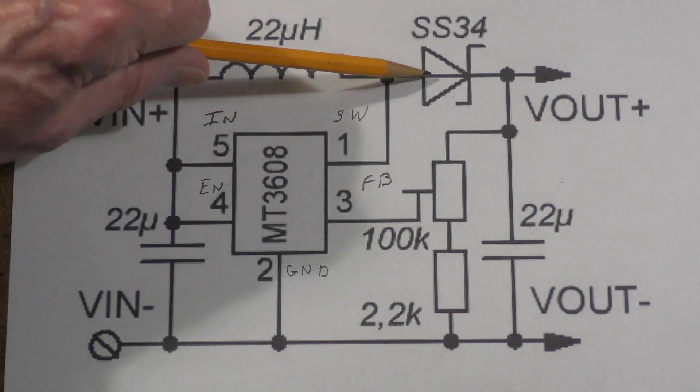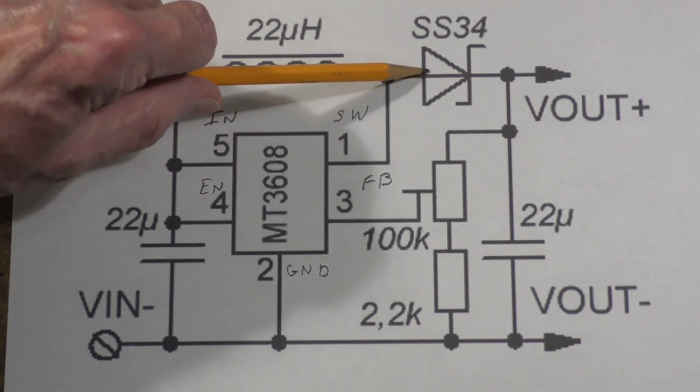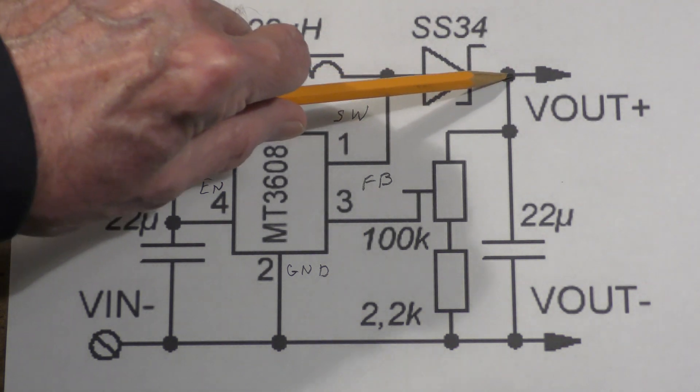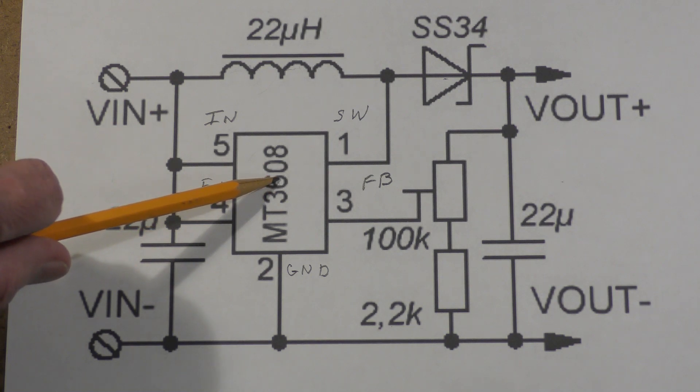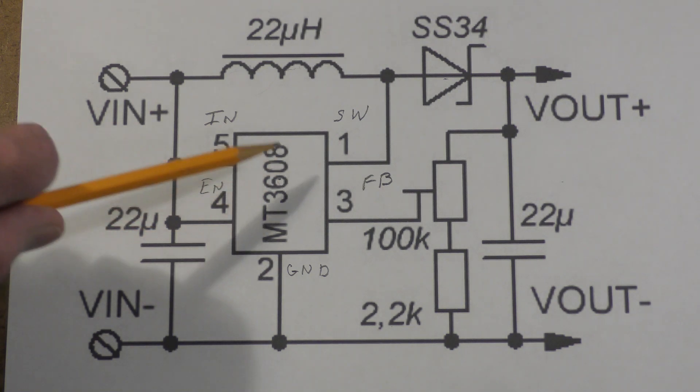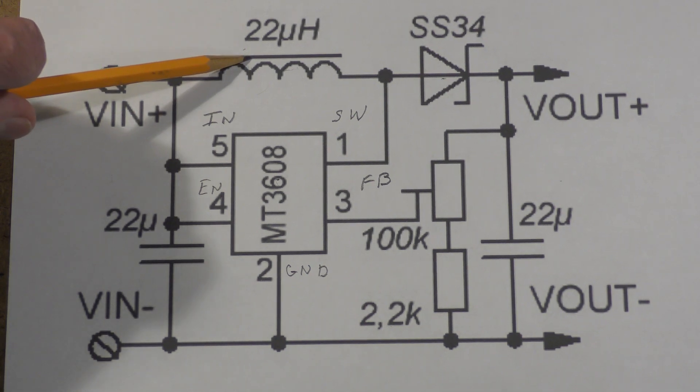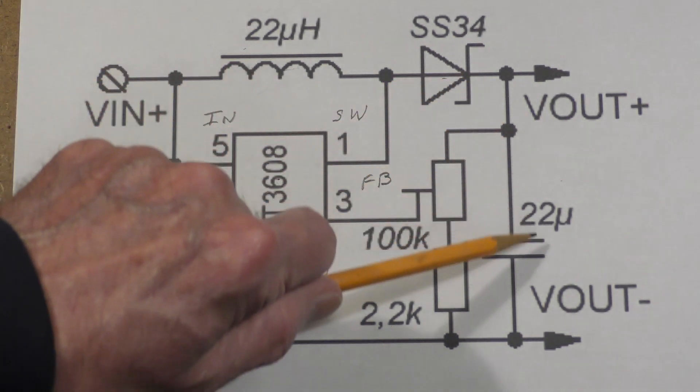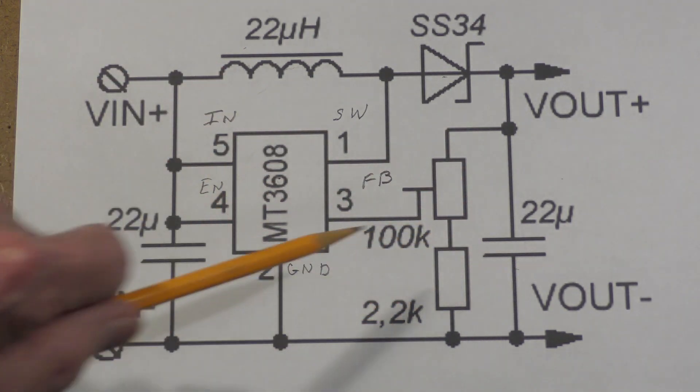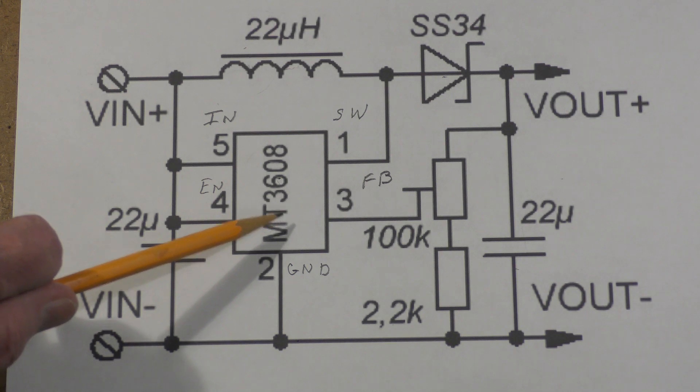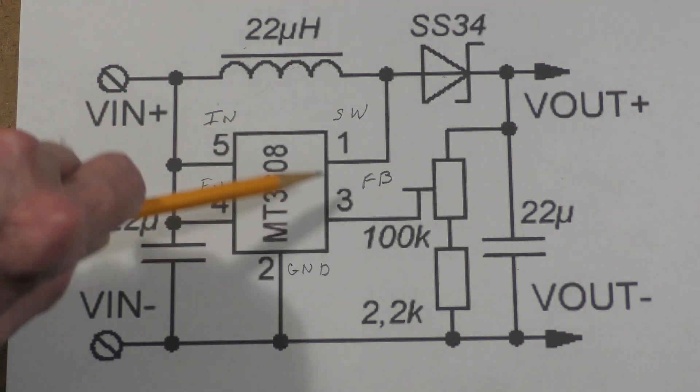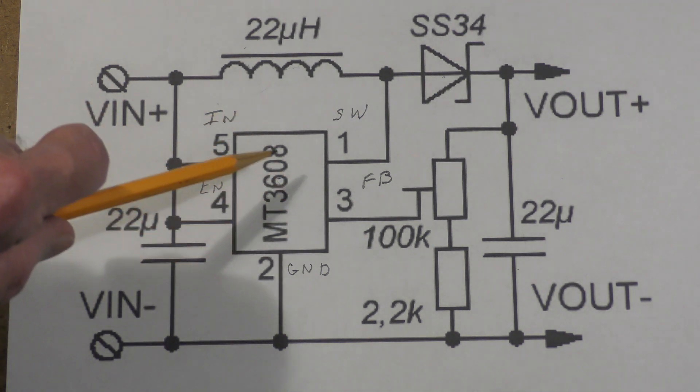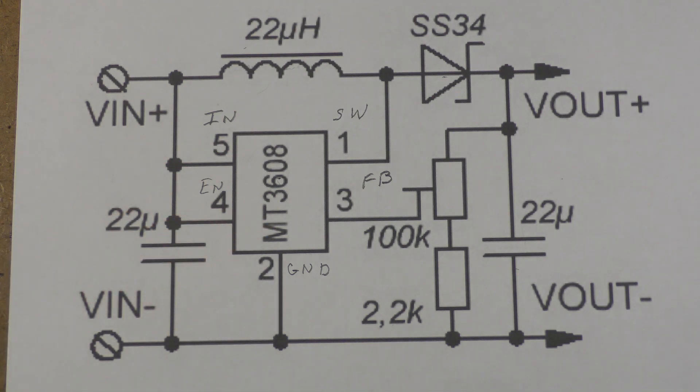We know that the total current flowing to the output has to come from the input, but it comes from the input in two different ways. One is through the inductor and the Schottky diode directly to the output. Then when this turns off, what it does is use the stored charge in this inductor to supply the output current during the time that the input is turned off. It does that inside the 3608, and we've earlier looked at a simpler version of a boost converter in which we just used a simple transistor and a diode.